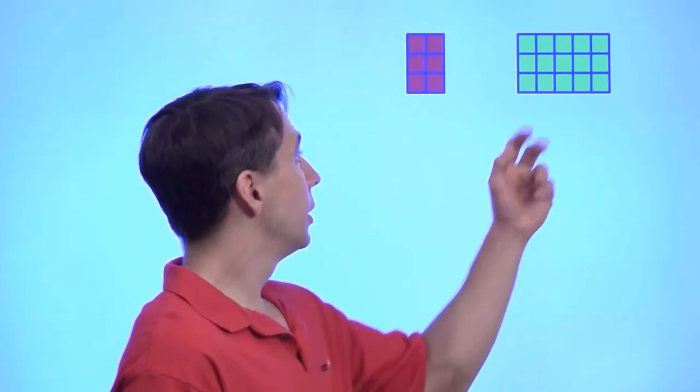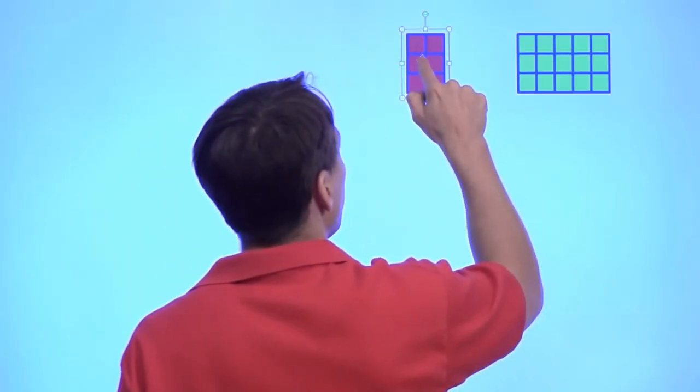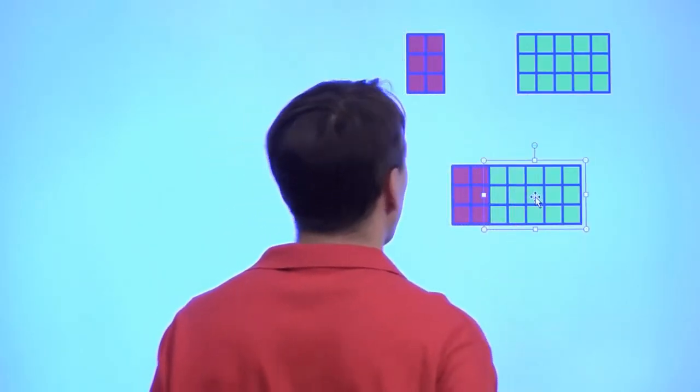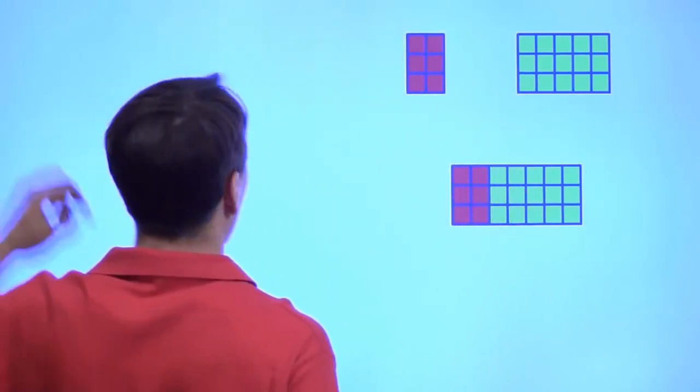We can count the squares over here, count the squares over here, and then add the two. Or we can see that we can fit these two rectangles together nicely, make a larger rectangle, and then we'll just count the little squares in the larger rectangle.